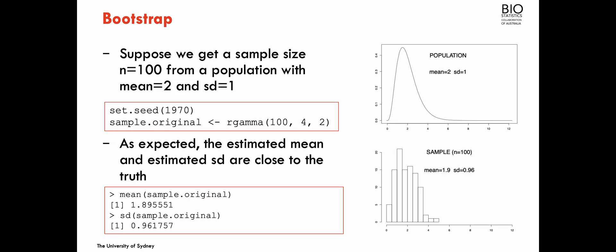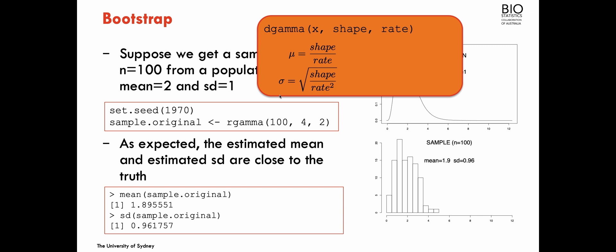From this population, I'm going to obtain a sample of size 100. In the first square, you have the R code to obtain a sample of size 100 from a gamma distribution — it should be rgamma, not dgamma. In R, the gamma distribution is parametrized by a shape and a rate parameter. The mean is given by the ratio of shape over rate, and the standard deviation by the square root of shape over rate squared.